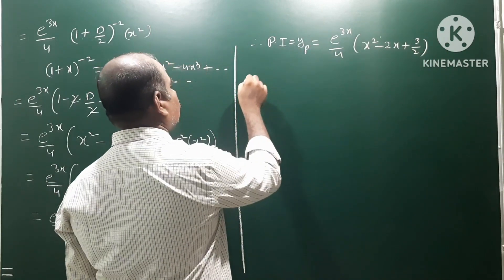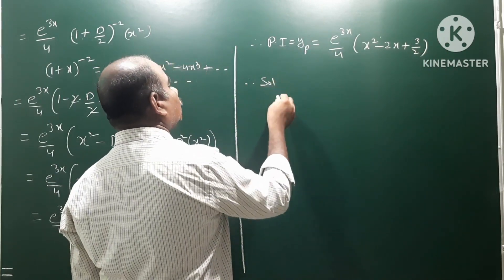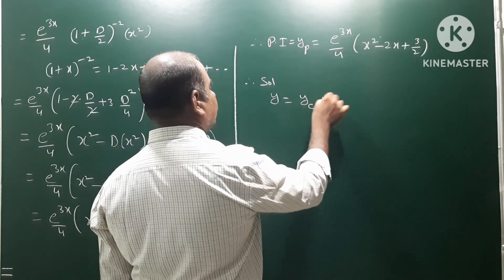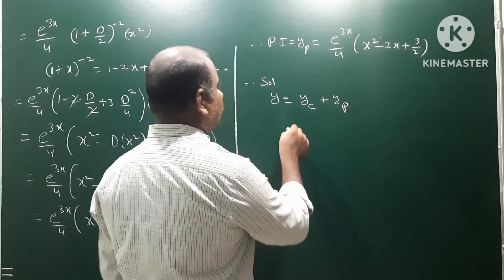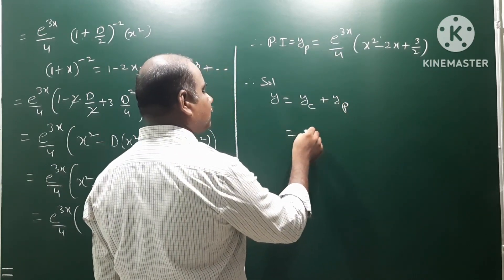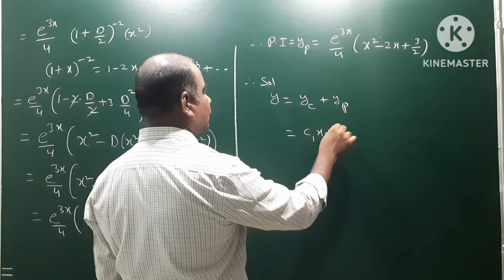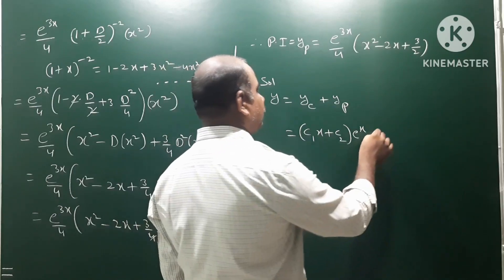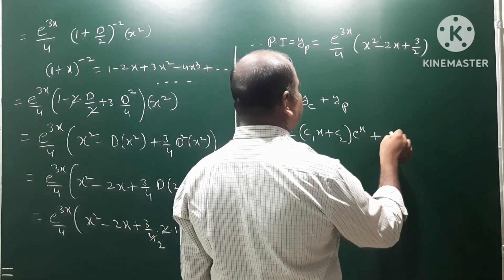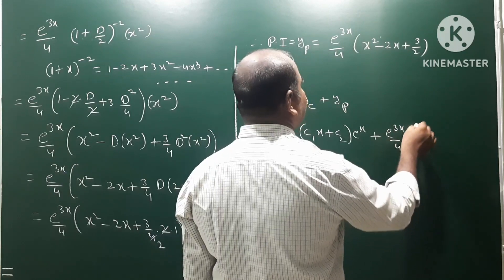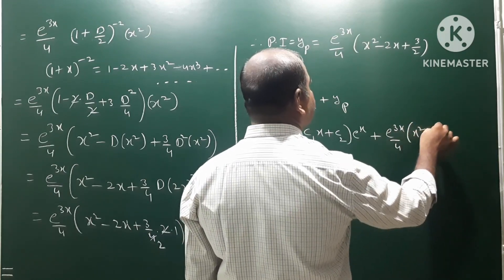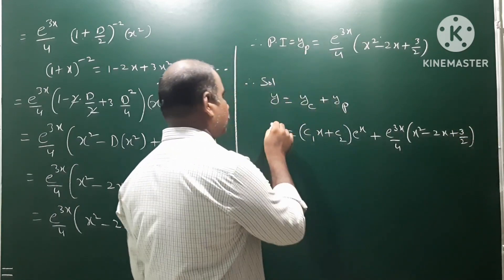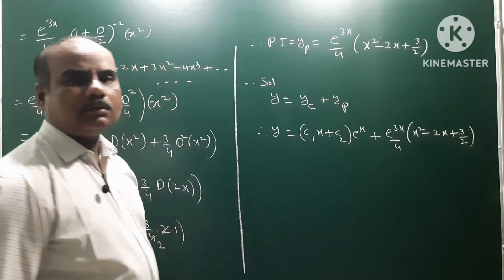Therefore the solution y = yc + yp = (c1 + c2·x)·e^x + (e^(3x)/4)·(x² - 2x + 3/2). This is the final answer.